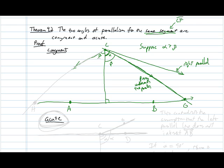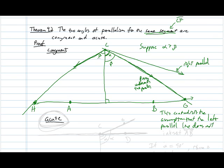We'll call the intersection point G. Then we can reflect this point over to the other side and construct a point H. By the congruence of these triangles, the left parallel line must actually not be parallel — it must intersect line AB. So if the right angle of parallelism is bigger, then the left parallel isn't really the left parallel. This contradicts the assumption that the left parallel line does not intersect AB.